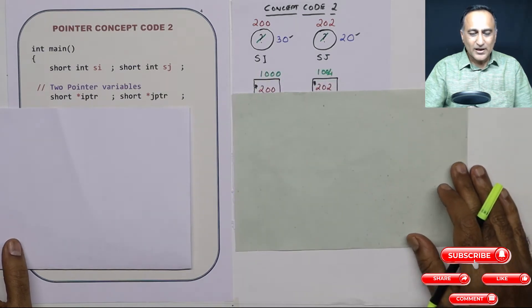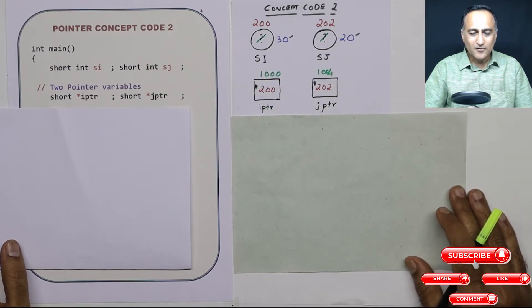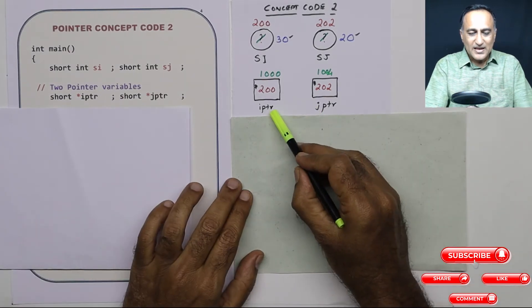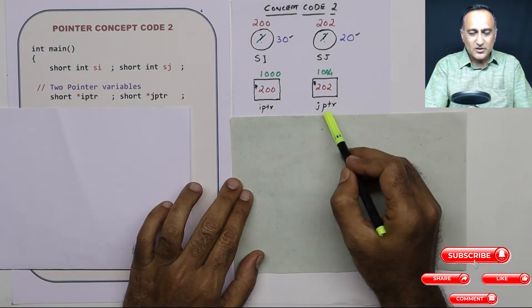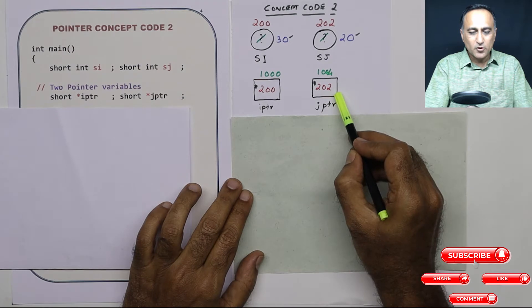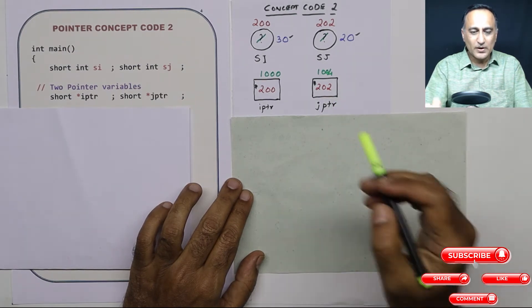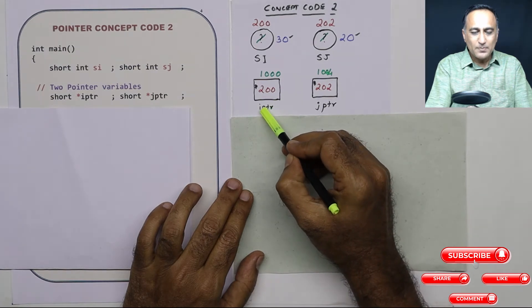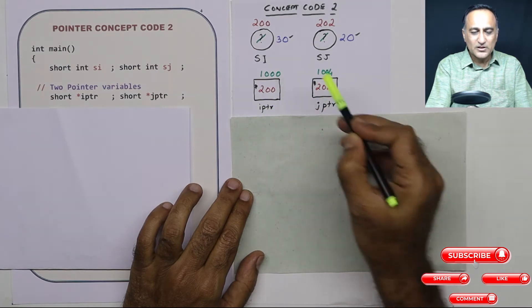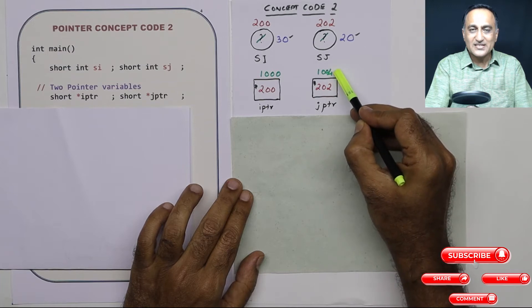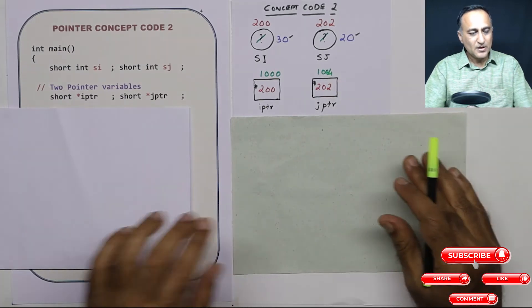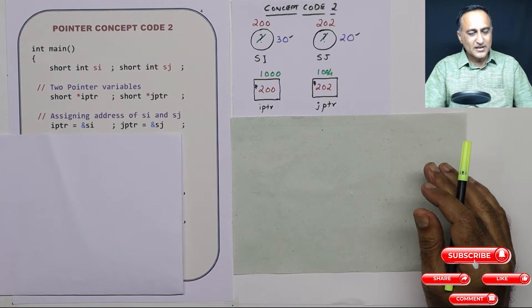So let's see how they look in the memory at this point of time. This is IPTR with the squarish box, JPTR with another square box. Since I have told you that they are also like normal variables, let us assume IPTR exists at address 1000 and JPTR exists at address 1004. Now let's tackle the next step.